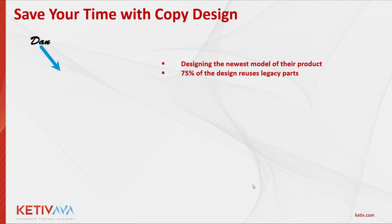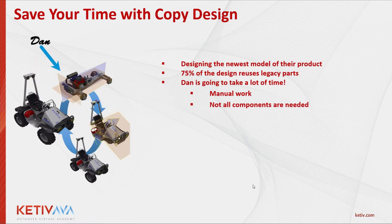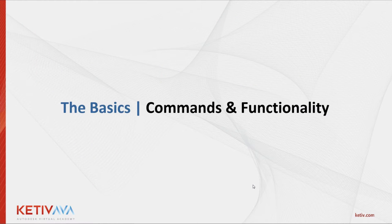Say you're going to reuse 75% of what you're working on — or maybe just 20%. A faster way is to start with copy design, grab an entire copy of the assembly, and start editing from there. You want to avoid doing this manually because it's going to be slower. Some components you don't need — maybe remove an entire sub-assembly, or immediately replace it, like swapping out a wheel set right off the bat.